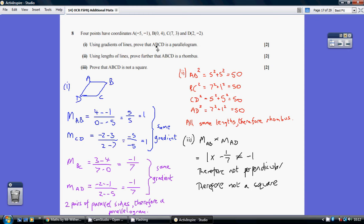Using gradients, prove that ABCD is a parallelogram. For a parallelogram, you need to show that the gradient of AB is the same as DC, and AD is the same as BC, because two pairs of parallel sides define a parallelogram.